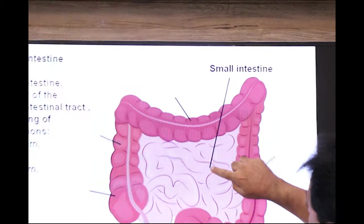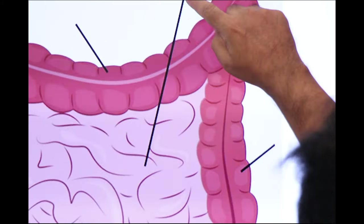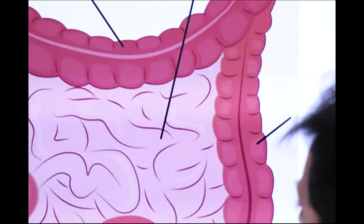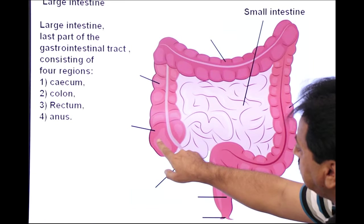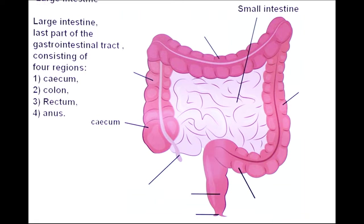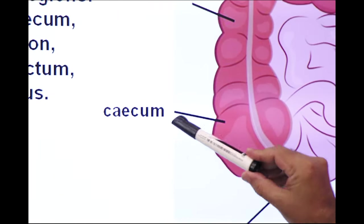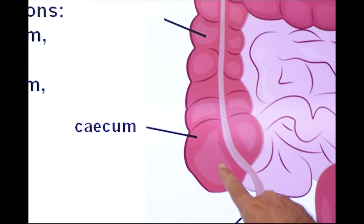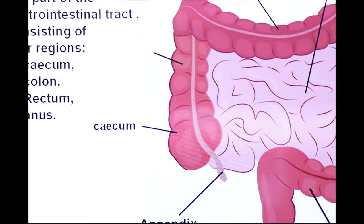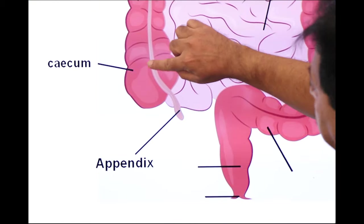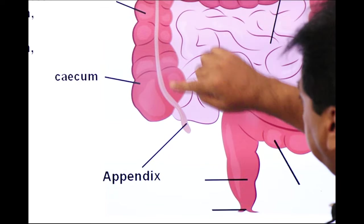Dear students, this is the portion of small intestine and small intestine opens into the first part of large intestine, cecum. And cecum is connected with a tube known as appendix and this is the colon.